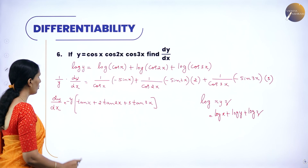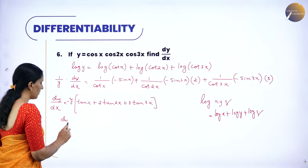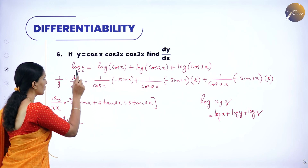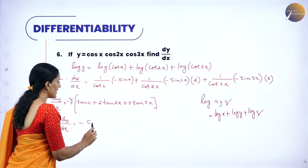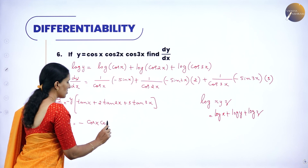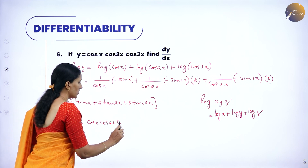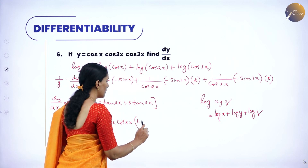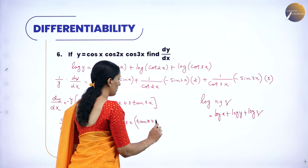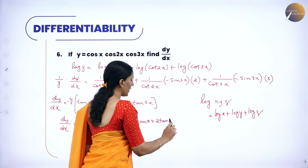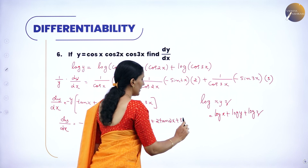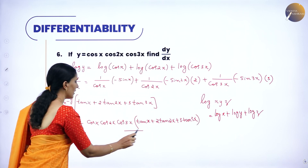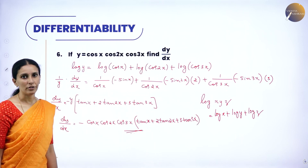So replace y back. Therefore dy by dx equals minus cos x · cos 2x · cos 3x into (tan x plus 2 tan 2x plus 3 tan 3x). This is the derivative of the given function.